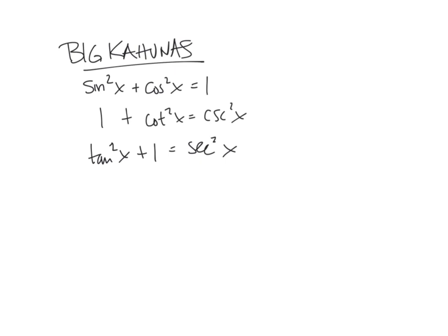For example, for this first one, the very first equation, let's say that I subtracted sin²x from both sides. I would have 1 - sin²x, right? So that's a different version of one of the big kahunas. It's still equivalent, but this may actually come in handy.